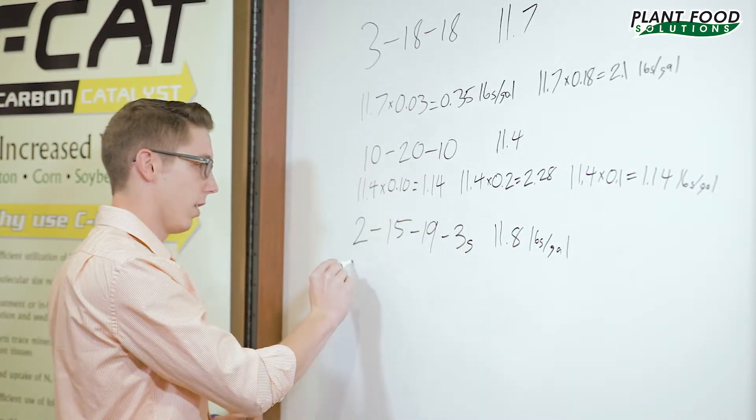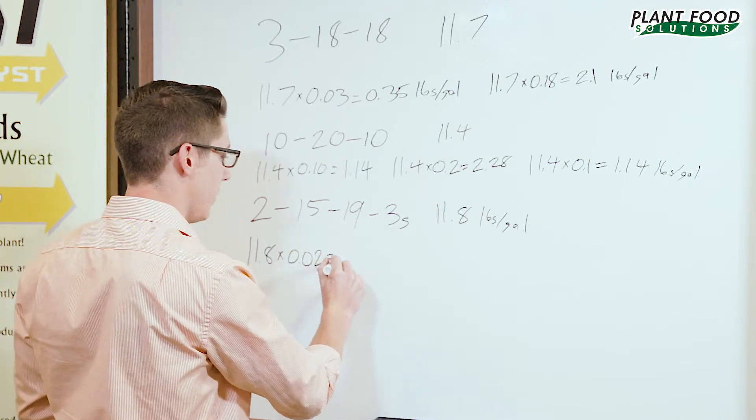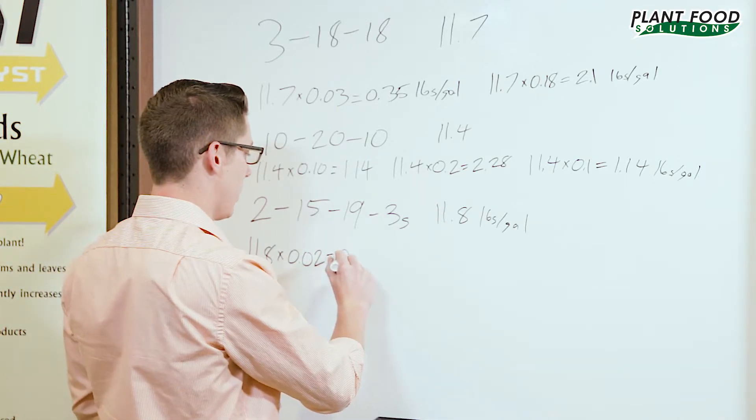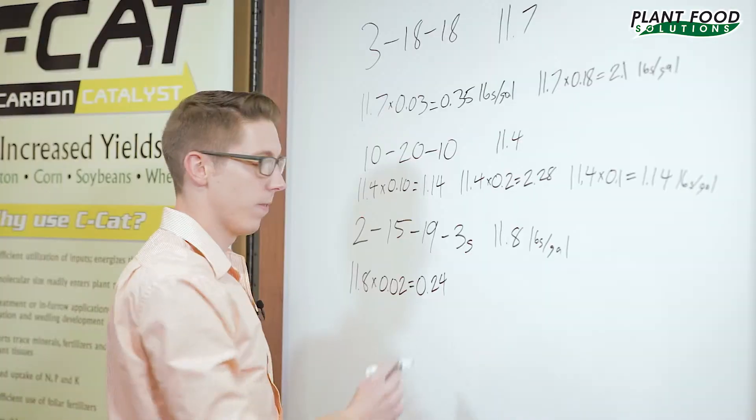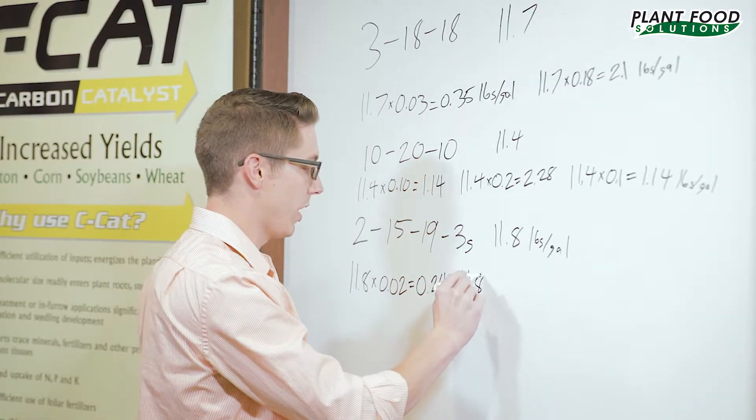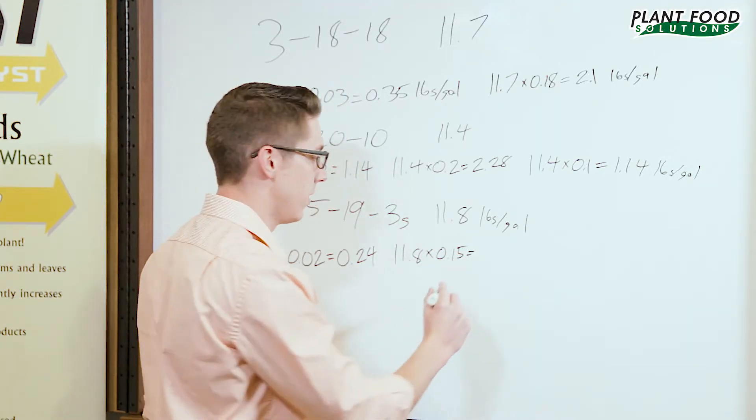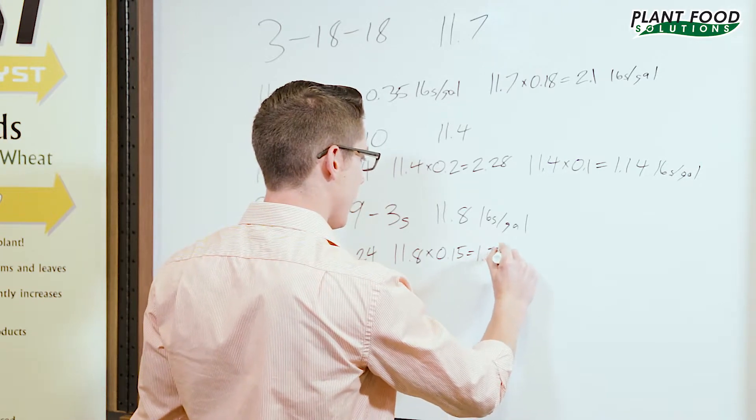So we're going to take 11.8 times 0.02, come up with 0.24. Your phosphorus is going to be 15%. 11.8 times 0.15, comes out to be 1.72.